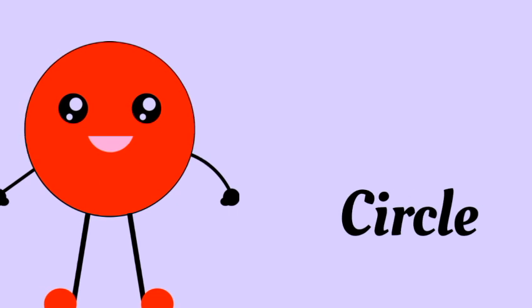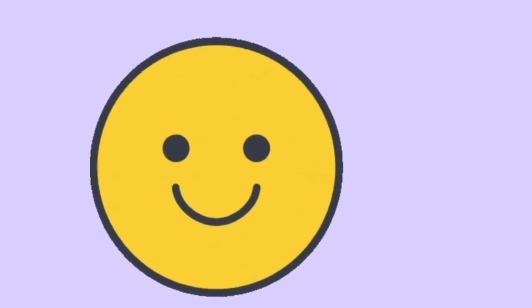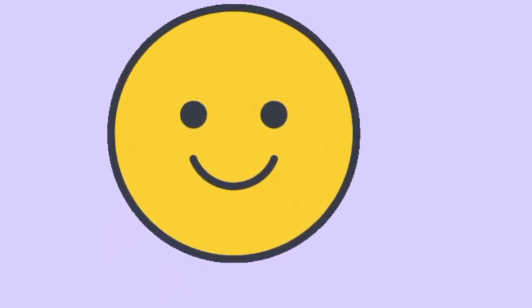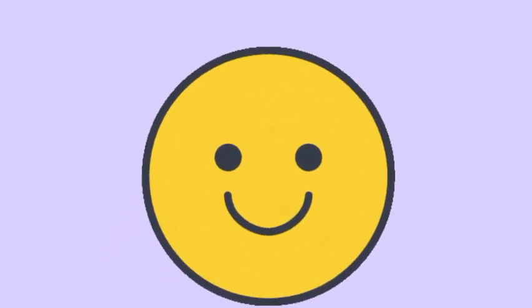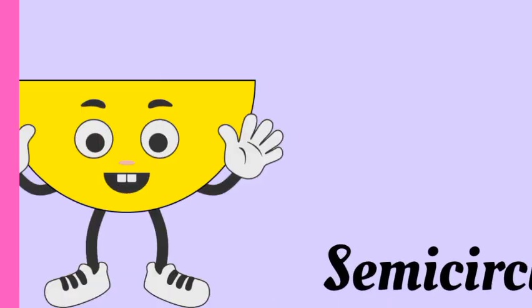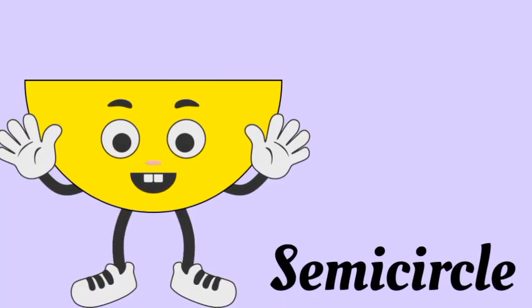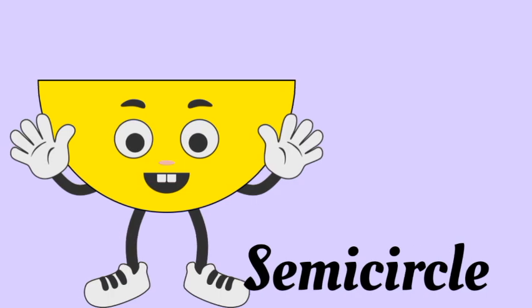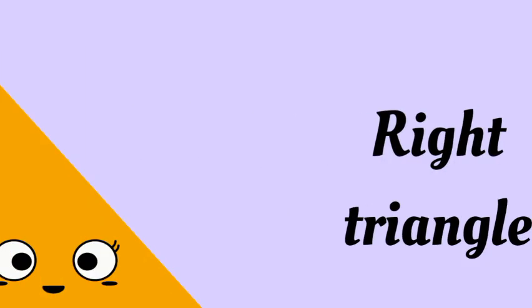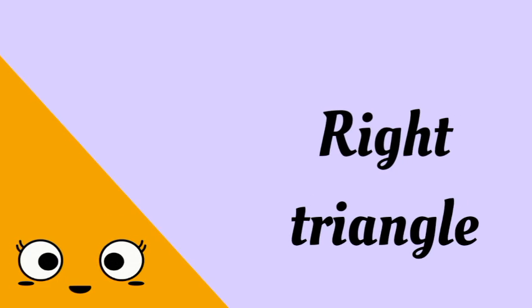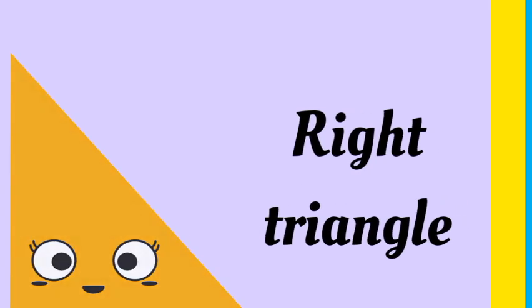Circle — circle has no sides and no angles. Semicircle — semicircle has one side and two angles. Right triangle — right triangle has three sides and three angles.